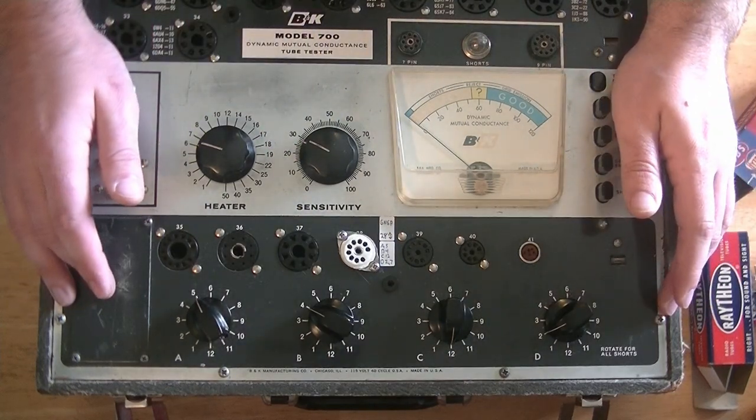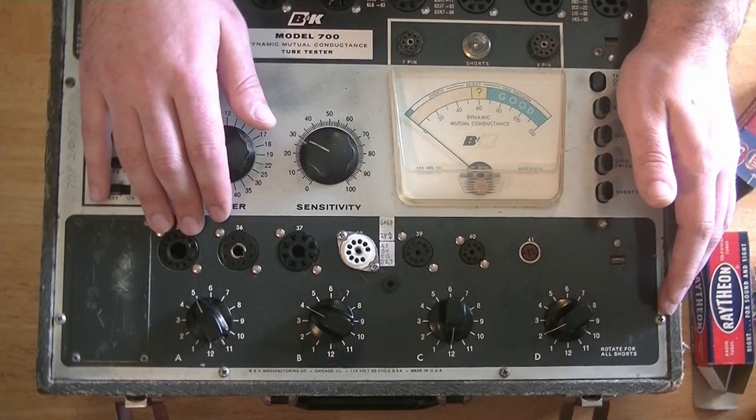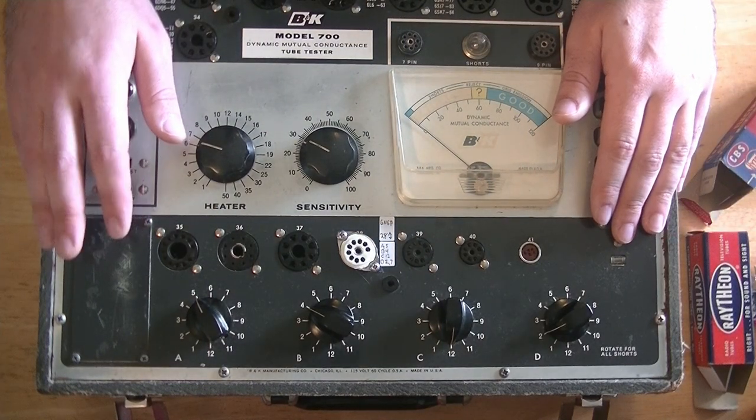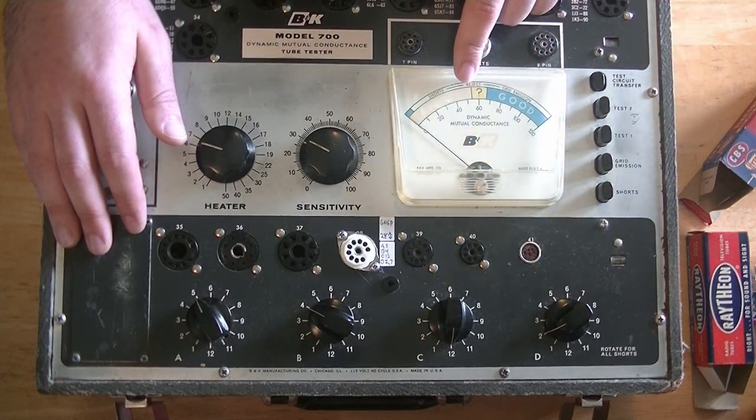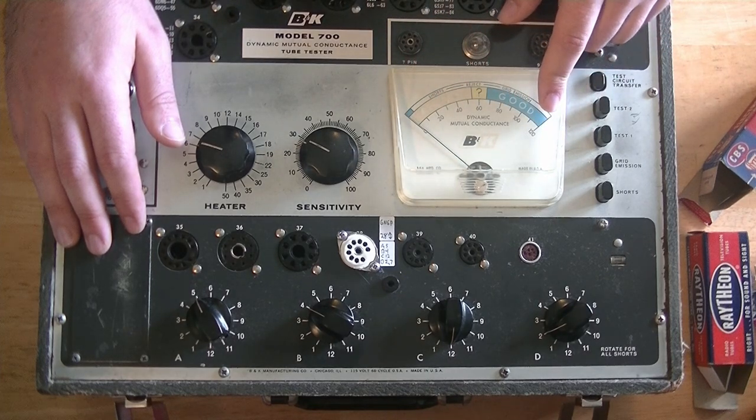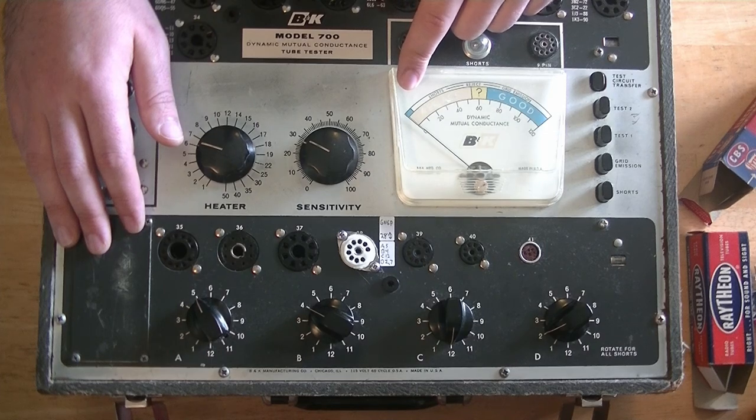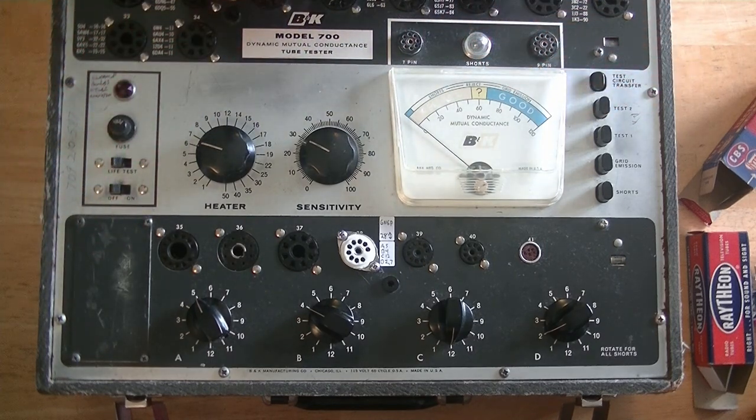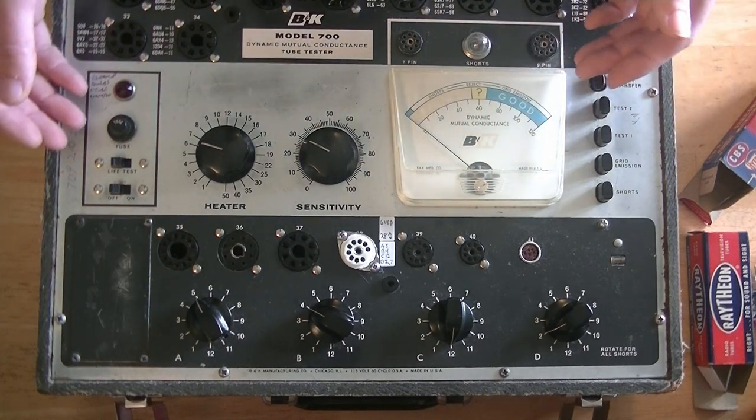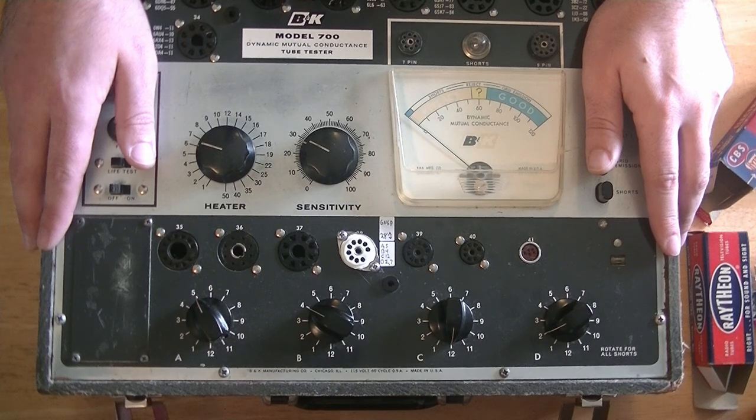The bottom section has switches for defining which pins connect where, and sockets that are wired up in different ways. It is great because it tests for emissions. The problem is that we have this meter to contend with, and it only goes from 0 to 120, and gives us a general value of if a tube is good, if it's on the edge, or if it's bad. Technically, we could match tubes this way. We could get a number off of this meter and use that to current match.